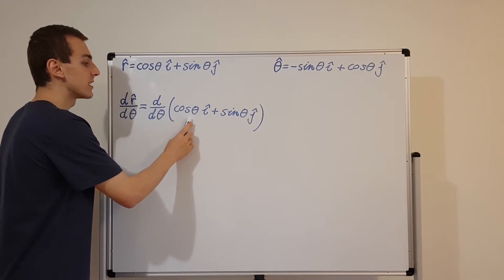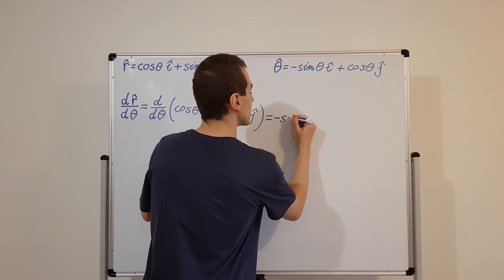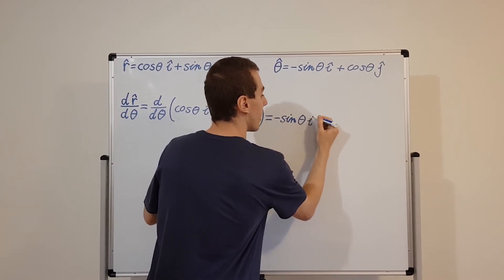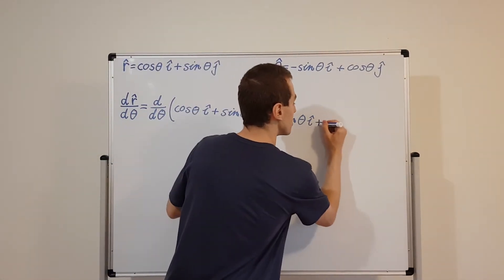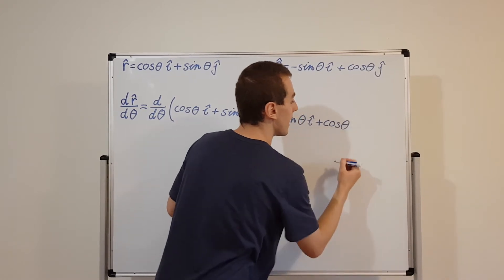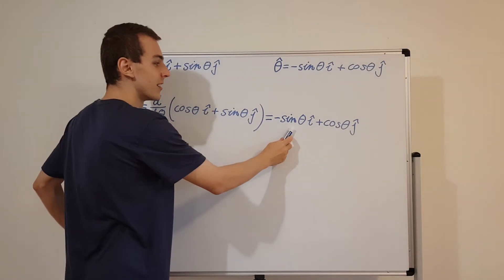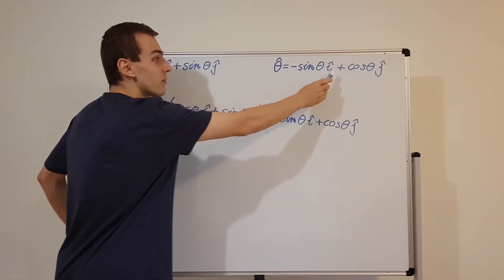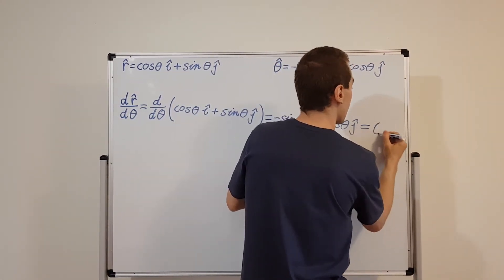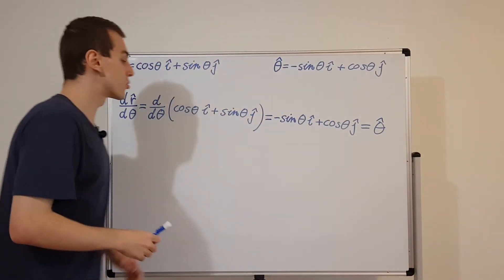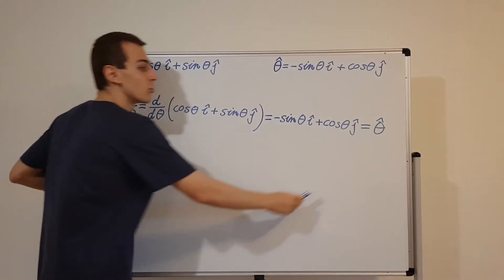The derivative of cosine theta is minus sine theta, so we get minus sine theta times i hat. And the derivative of sine theta is cosine theta, so we get cosine theta times j hat. But have a look — this is exactly the definition of theta hat that we wrote above. So the derivative of r hat with respect to theta is equal to theta hat. When you differentiate r hat with respect to theta, you get theta hat.